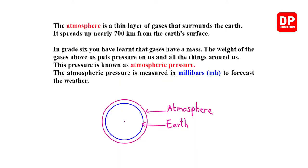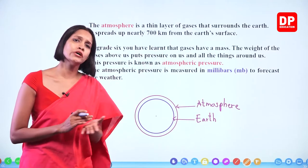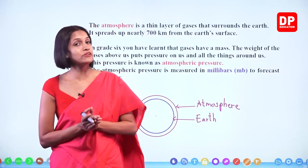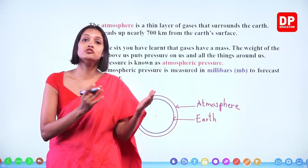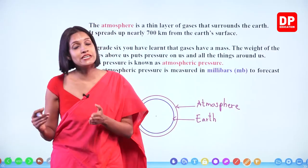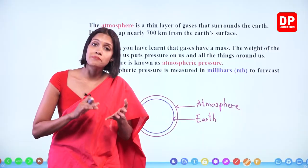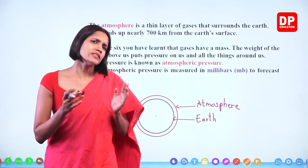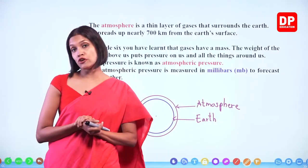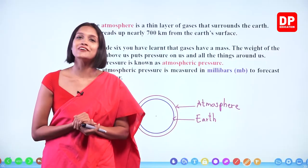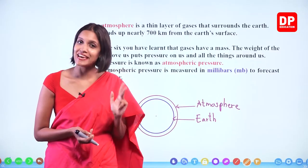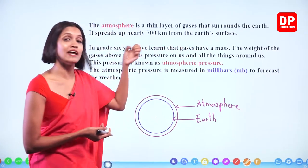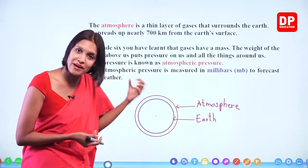In grade 6, second lesson, we learned about things around us — that matter has a mass and occupies space. There are three states of matter: solids, liquids, and gases. So gases have a mass. The weight of the gases above us puts pressure on us and all things around us. When we are living on this earth, above us there is an air column, and we are carrying the weight of that air column all the time.